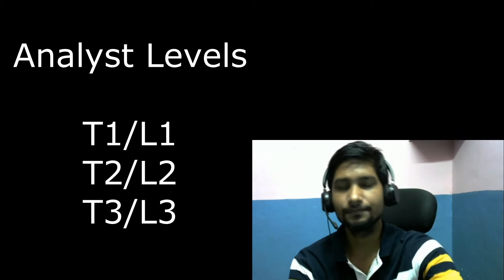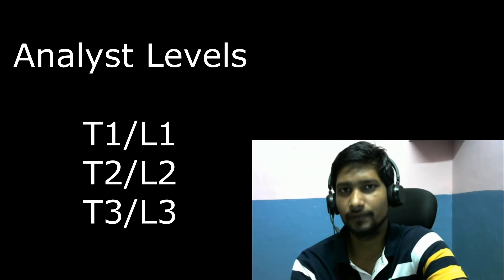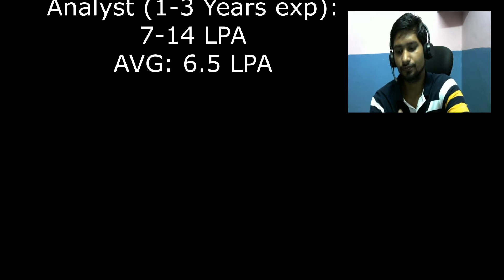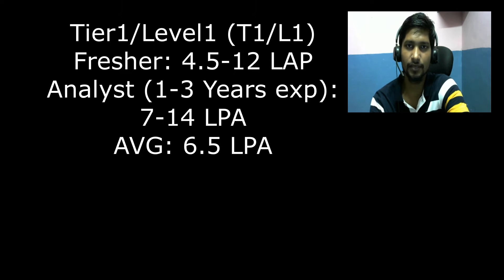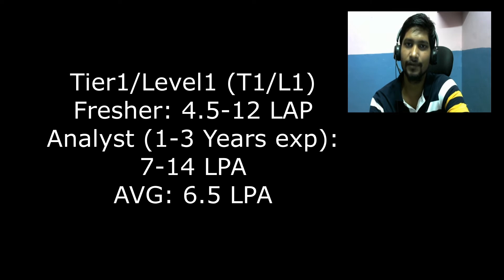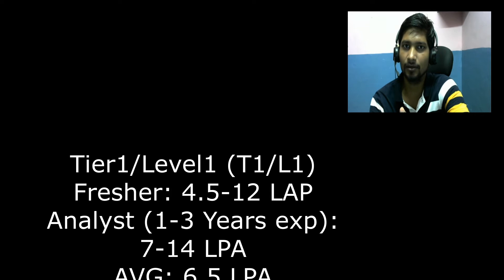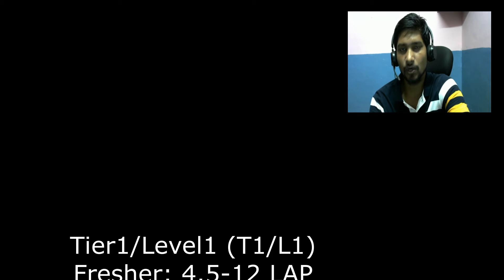Starting from Tier 1, we have Tier 1, Tier 2, and Tier 3 — also known as Level 1, Level 2, and Level 3. For a Tier 1 (L1) analyst, the salary range is 4.5 to 12 LPA for freshers. If you have 1 to 3 years of experience, you can earn up to 7 to maybe 14 or 15 LPA — it totally depends on your skills and the company. The average for Tier 1 is 6.5 LPA.